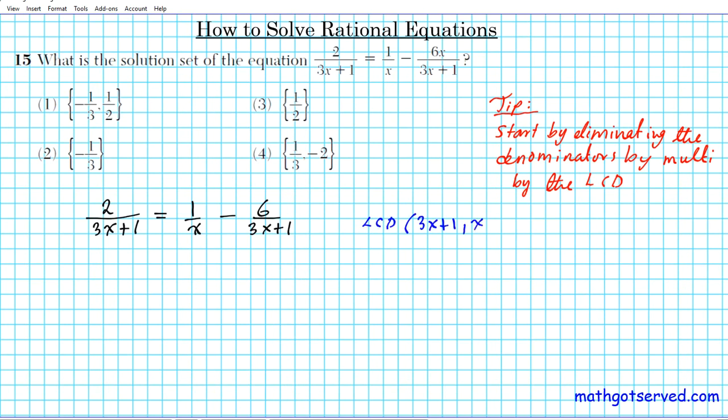To accomplish that, we have to find the LCD of the denominators. So the LCD of 3x plus 1 and x is the binomial expression that these two can go into evenly. Since there are no common factors, it's simply going to be x times 3x plus 1. If you do not know what the LCD is, just take all the denominator factors, put them next to each other and multiply.